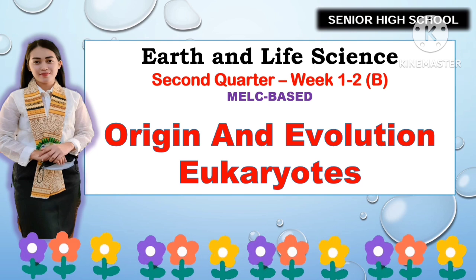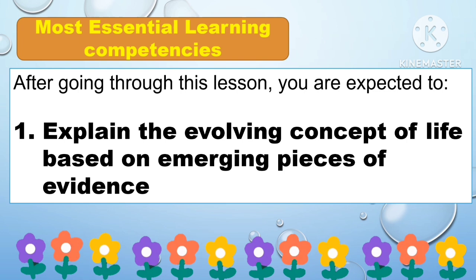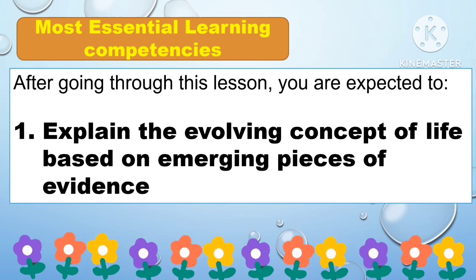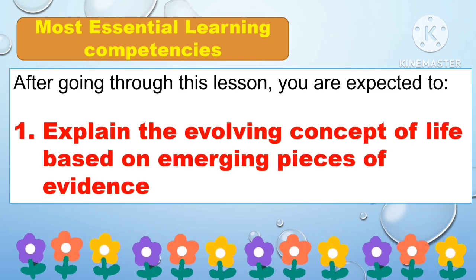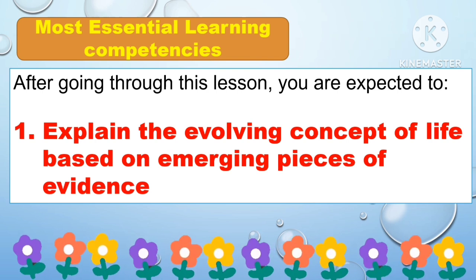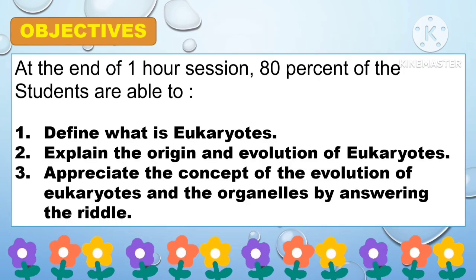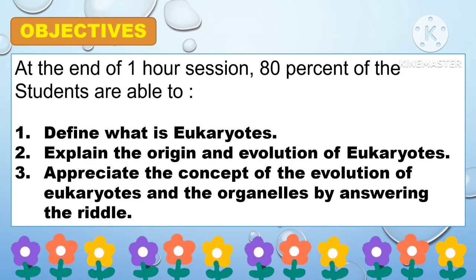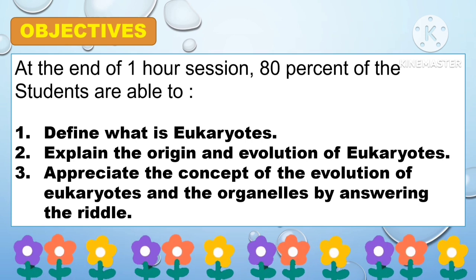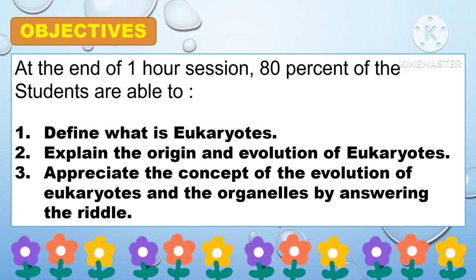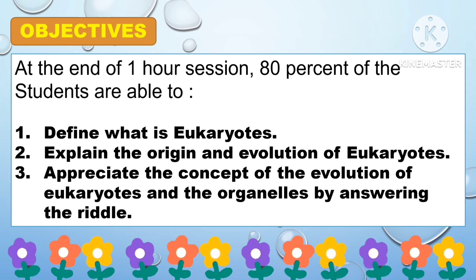This lesson is under the MELC. For the most essential learning competencies, after going through this lesson, you are expected to explain the evolving concept of life based on emerging pieces of evidence. For the objectives, at the end of one-hour session, 80% of the students are able to: first, define what is Eukaryotes; second, explain the origin and evolution of Eukaryotes; and third, appreciate the concept of the evolution of Eukaryotes and the organelles by answering the riddle.